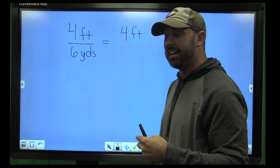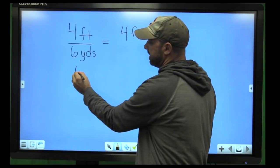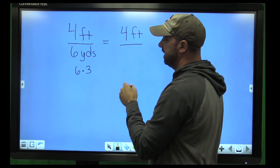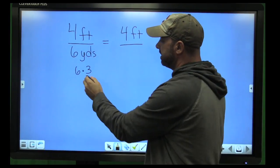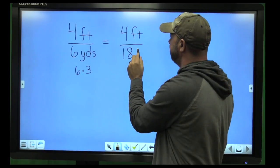Well, I know that there's three feet in a yard. So I have to multiply six by three to get the amount of feet in the yards. Six times three is 18 feet. So six yards is 18 feet.